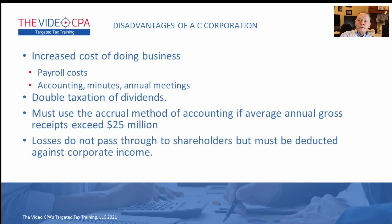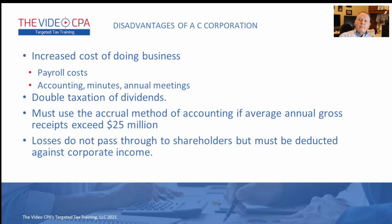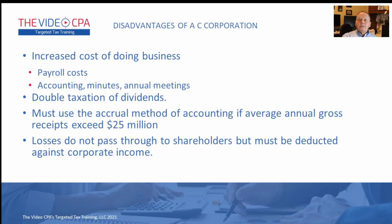There is an increased cost of doing business with a C corporation. If you're going to incorporate, you've got the cost of incorporation — in some states that's not much. In Idaho, you can file for around a hundred dollars and do your own corporation, but if you pay an attorney you're probably looking at a thousand dollars. Also, the owners are employees of the corporation, so you do have to have payroll set up. That is an increased cost of doing business.